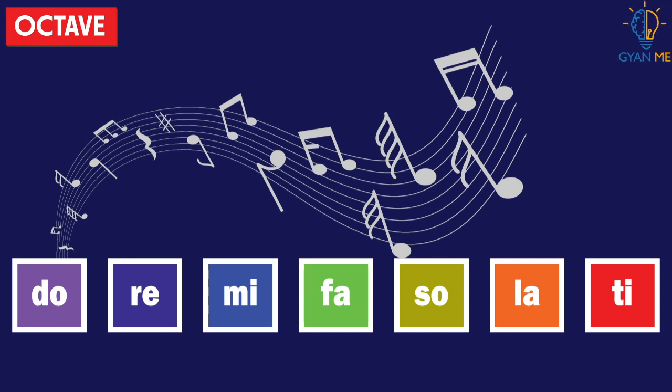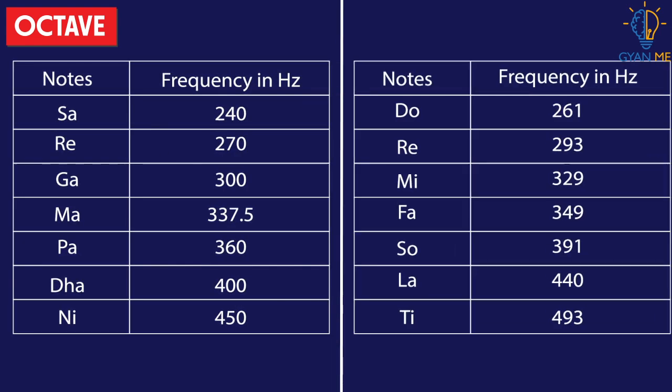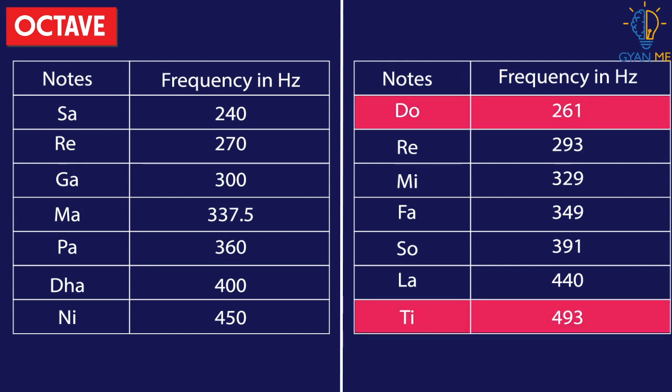This is true for musical notes in western music as well. Like the Indian octave, in the western octave also there are eight musical notes. You can see in the table that the frequency of the last note is double that of the first note, even in the western octave.